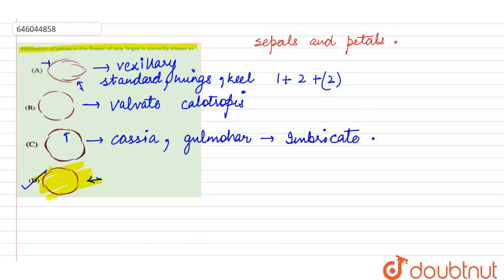This type will be called as a twisted type in which there is regular overlapping. We can very clearly see that one petal is outside whereas the other one is overlapped on the inner side, and this regular arrangement goes on with all the other petals also.